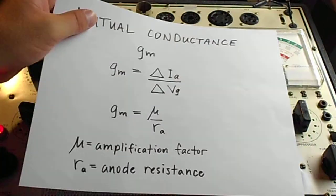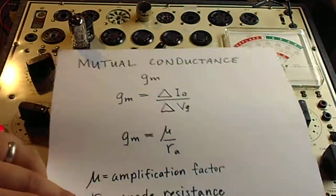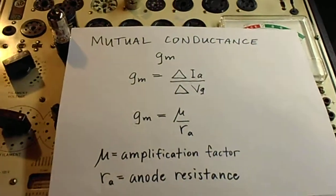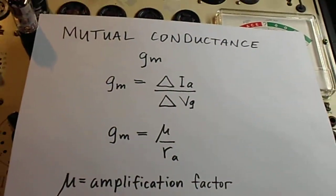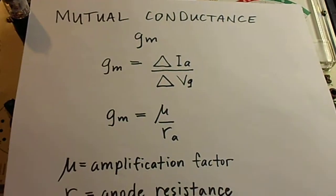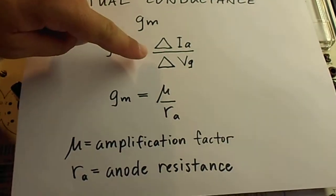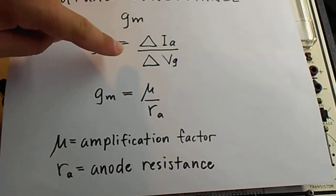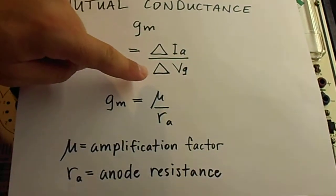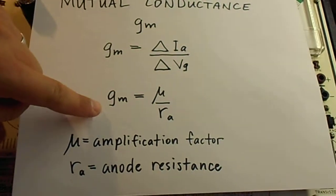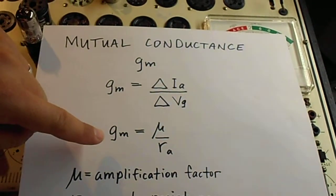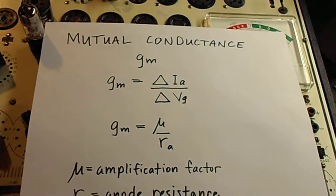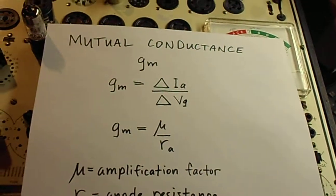So here we're going to pull out some theory. I know this is kind of tacky in this modern age of technology to put a printout in front of the camera, but I don't care. Mutual conductance, Gm, is a ratio of the change in anode current to the change in grid voltage. It's also the amplification factor divided by the anode resistance.